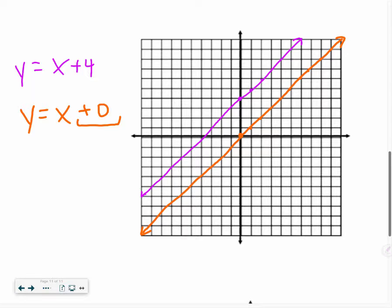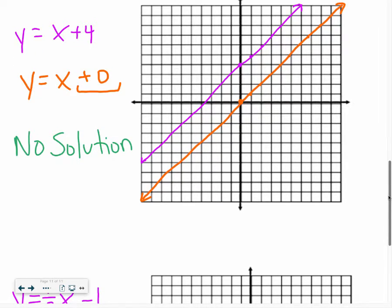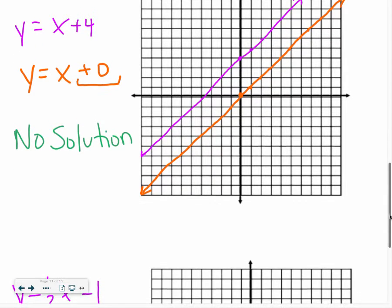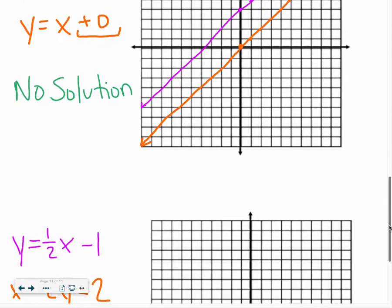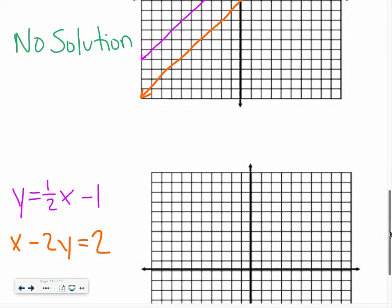Previously, we said our solution was wherever the lines intersected. So if the lines don't intersect, that means that your answer is no solution, because we don't have an intersection point. So if you have parallel lines, your answer is always going to be no solution. We have to be careful on how you draw your lines, because if you mess up on your lines, it might look like they're going to intersect when they really don't.